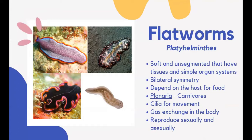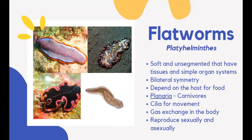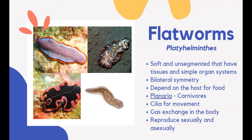Flatworms, also known as platyhelminths, are soft, unsegmented worms that have tissues and simple organ systems. They are a very diverse group with 20,000 species. Flatworms exhibit bilateral symmetry — the left and right sides look similar. Most flatworms, such as tapeworms and flukes, are parasitic and depend on hosts for food. Non-parasitic flatworms, like planaria, are carnivores that eat tiny aquatic invertebrates. Food and waste pass through the same body opening, the pharynx. Flatworms reproduce both sexually and asexually.